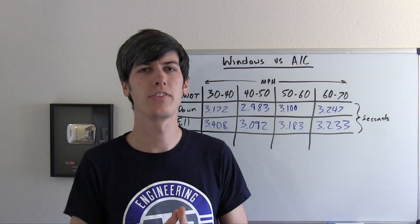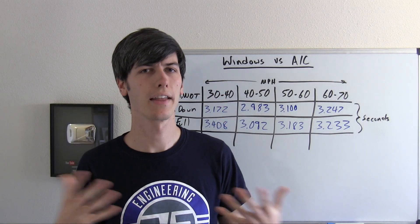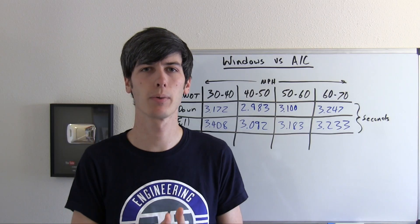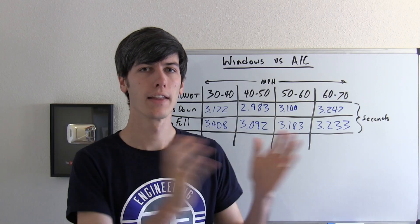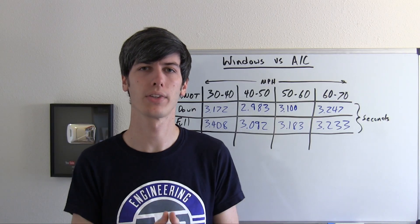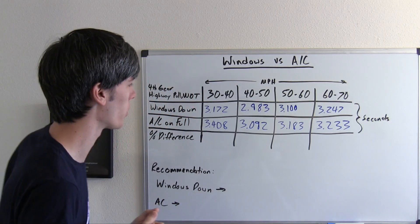That first run with the AC on was a little bit of an outlier. That said, we can take the average of the three runs and all three runs were still significantly longer than the three runs with the windows down. So we can still get meaningful results from it.